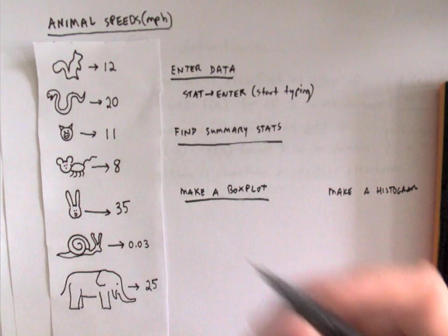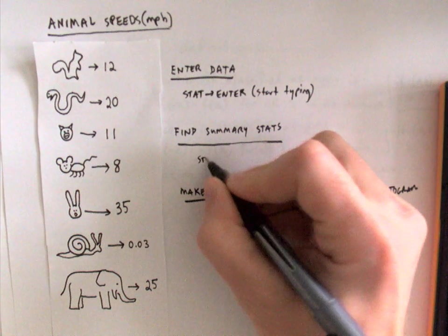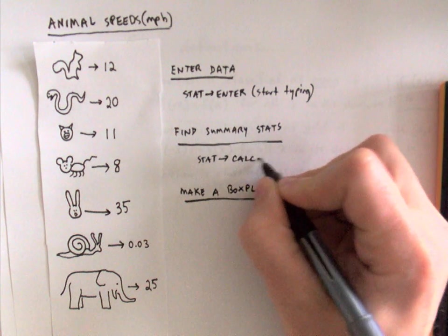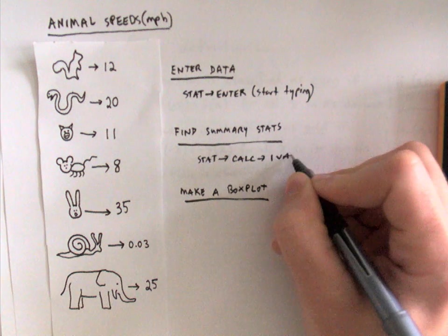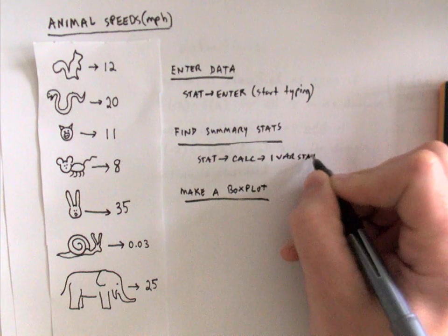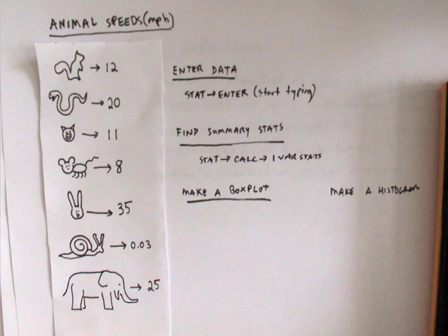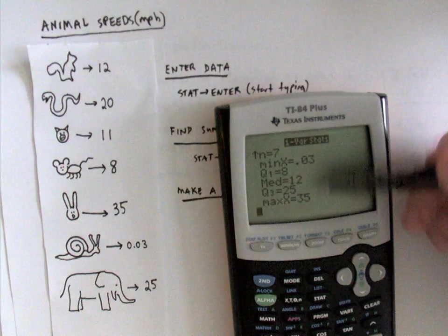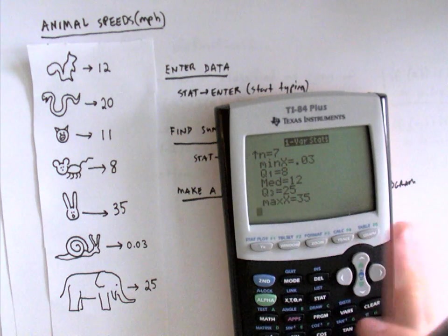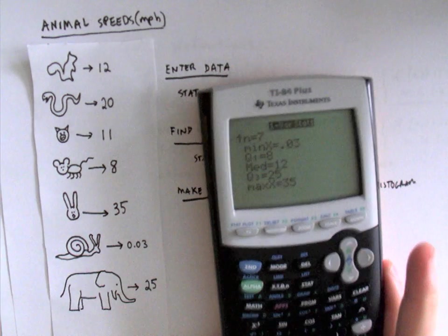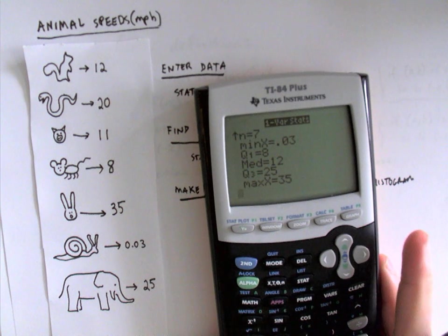To summarize how to find summary stats, you press the stat key, but now you arrow over to the calc menu and you select one var stats. Make sure you just know which statistic is which. Okay, next thing. How do you make a box plot? So we certainly could just take these values that we got here and make a box plot. But that's kind of a pain to do by hand and it's nice to see it on the calculator and maybe compare different box plots.